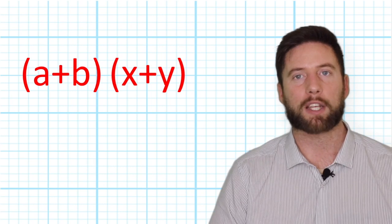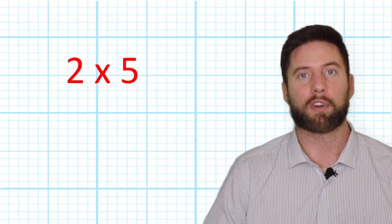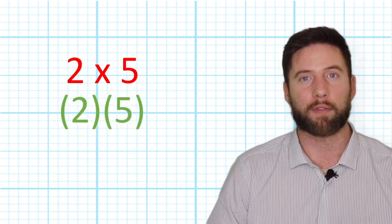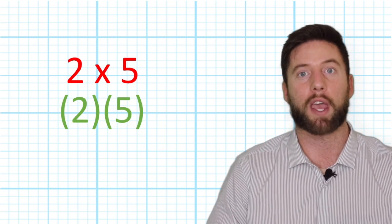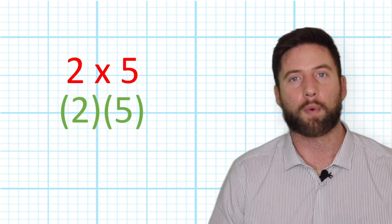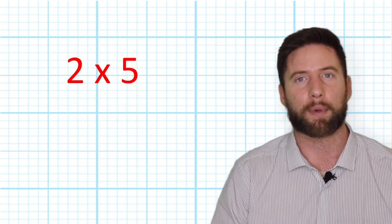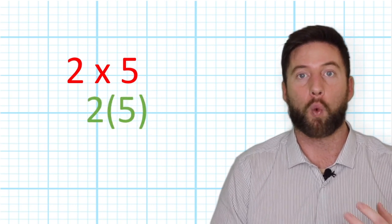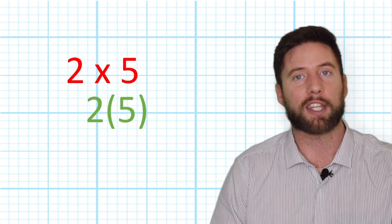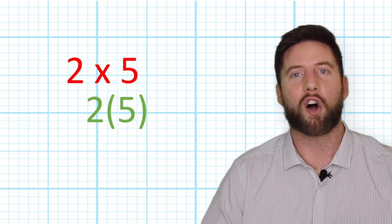So technically, going back to our 2 times 5, we could put them in parentheses. Therefore, this cannot be confused with the number 25, and we know that multiplication is implied because there's nothing between them. Or, because putting two separate individual things in brackets looks a bit strange in math, we could put one digit in parentheses and leave one out. Again, multiplication is implied because there's no other symbol between them.